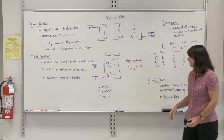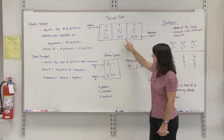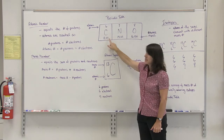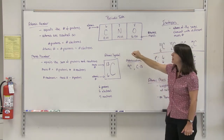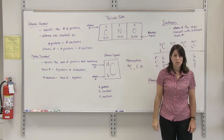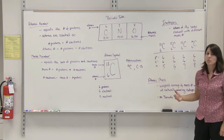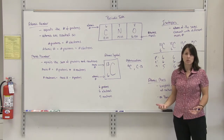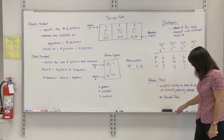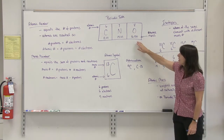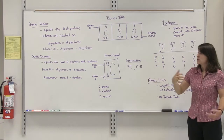The next number we're going to talk about is the atomic mass. Atomic mass is listed on the periodic table underneath the symbol of each element. As you can see, it's a decimal number. For carbon, the atomic mass is 12.01. For nitrogen, it's 14.01. For oxygen, it's 16.00. This number represents a weighted average of the mass numbers of all the naturally occurring isotopes for that specific element. Since it is an average, it's a decimal number.